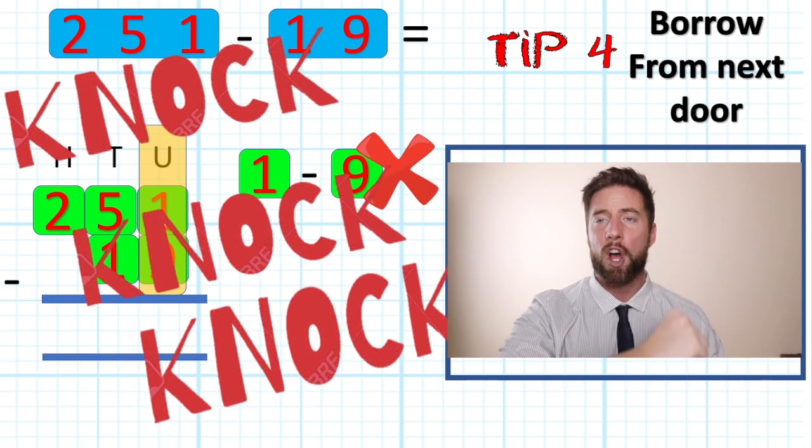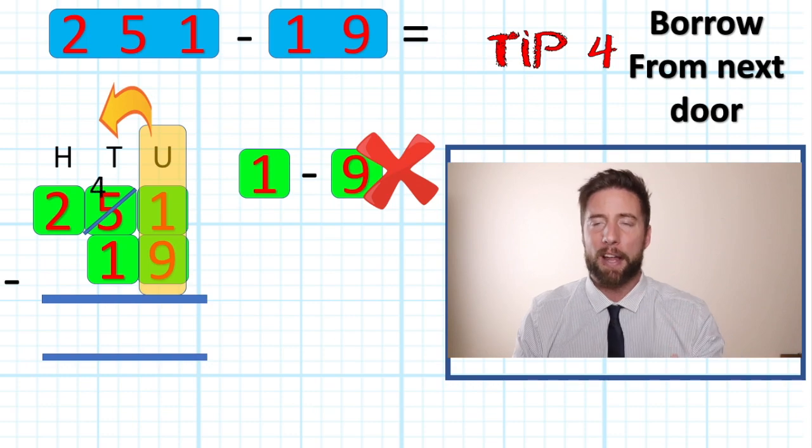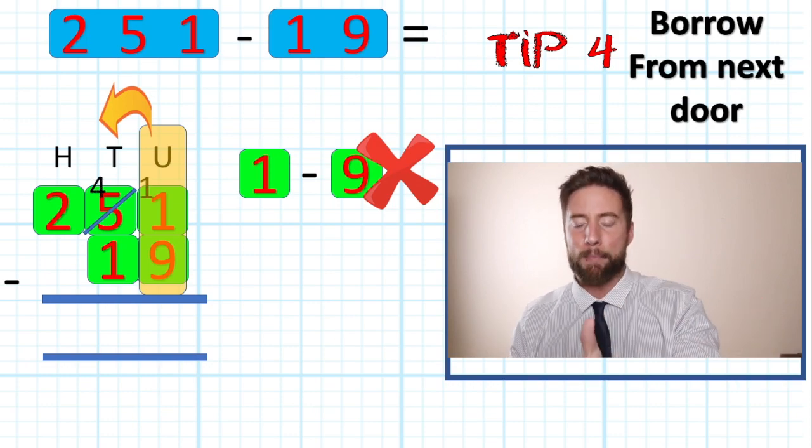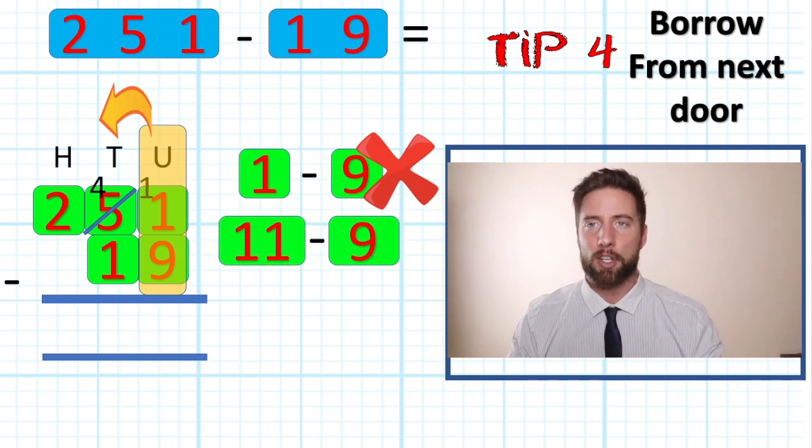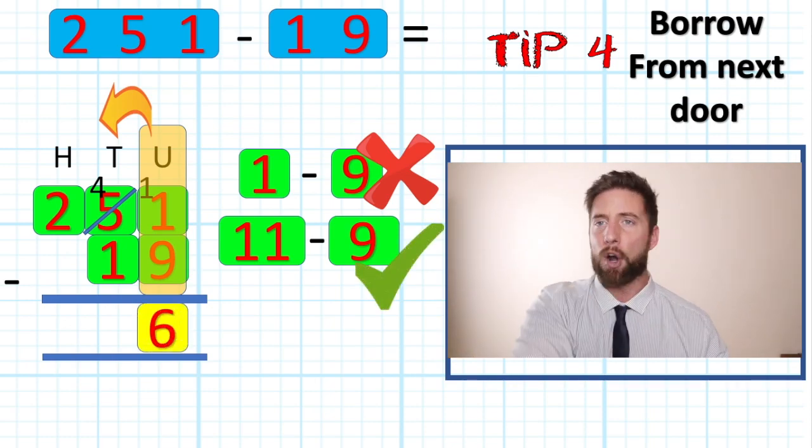I'm going to knock next door and borrow from my tens column. Borrow one of my five tens, put that down to a four and make my one an 11. 11 subtract nine is doable. Okay, good. Tip number four: borrow from next door. Oh, rhymes.